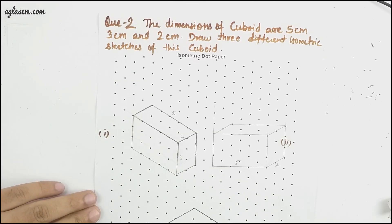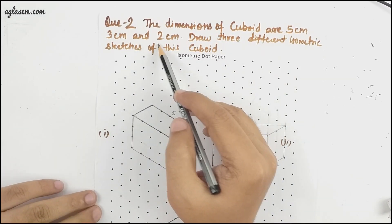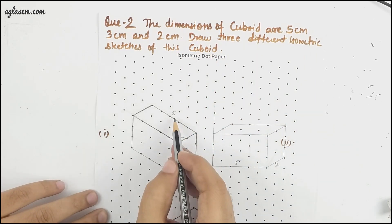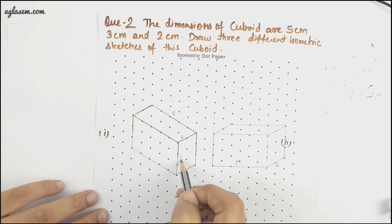That says dimensions of cuboid are 5 cm, 3 cm, 2 cm. Draw three different isometric sketches of this cuboid. So we have five here, two here, two here, three here. So first one is this.